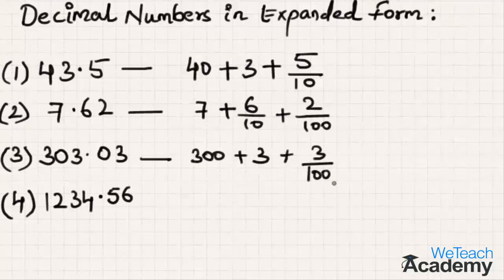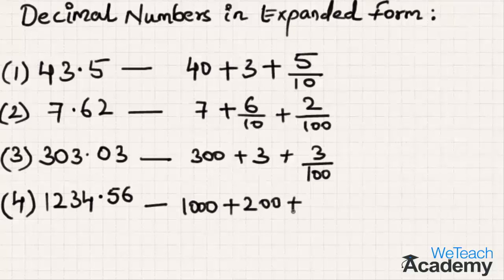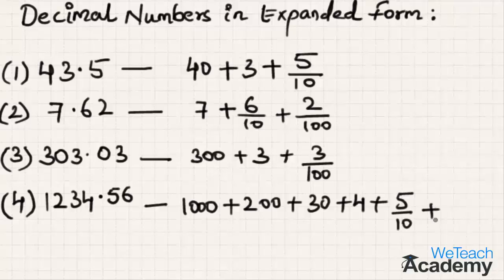Coming to the fourth example: 1 is in the thousands place giving 1000, plus 2 in the hundreds place giving 200, plus 3 in the tens place giving 30, plus 4 in the units place giving 4. In the decimal part, 5 in the tenths place becomes 5 by 10, and 6 in the hundredths place becomes 6 by 100. Hence this is the expanded form of 1234.56.